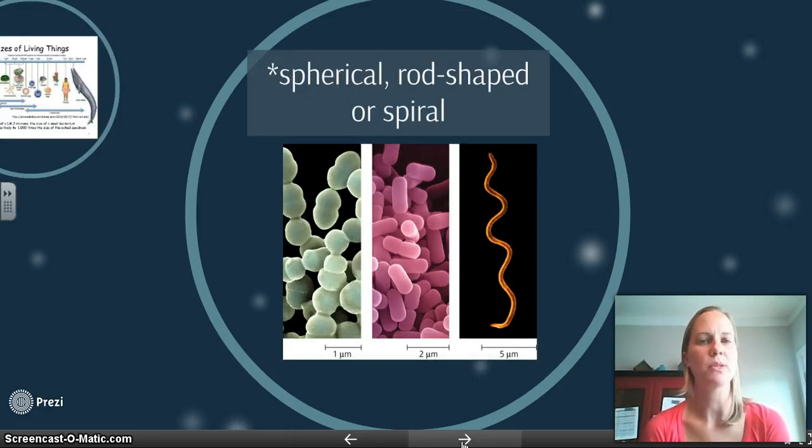Bacteria come in three different shapes: Spherical, those are the circular ones that you see on the left that are kind of greenish in color. They're rod-shaped, which is what you see in the middle. And then they're spiral, which is what you see on the end.